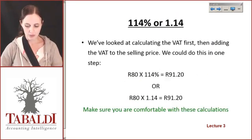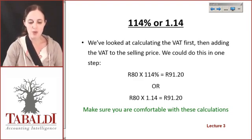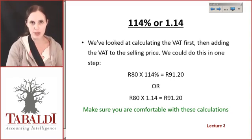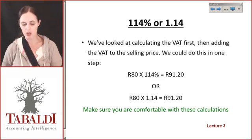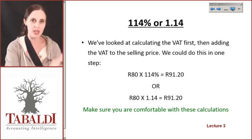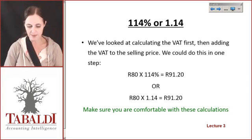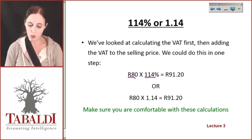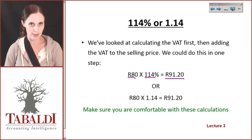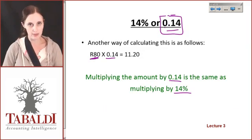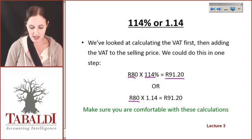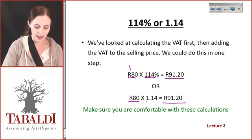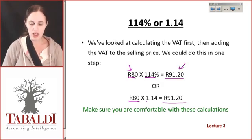So let's look at this another way. We've looked at calculating the VAT first, then adding the VAT to the selling price — we could do this in one step. Instead of saying 80 Rand times 14% is 11 Rand 20 plus the 80 Rand equals the total, we could do this all in one step and go from the exclusive amount to the inclusive amount by saying 80 times 114% will give me 91 Rand 20. Or we could also say 80 times 1.14 gives you 91 Rand 20. This is my exclusive amount and this is my inclusive amount.